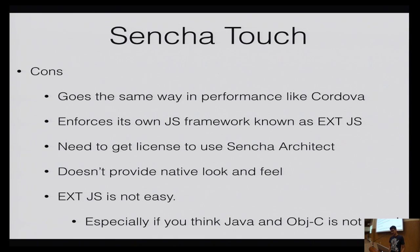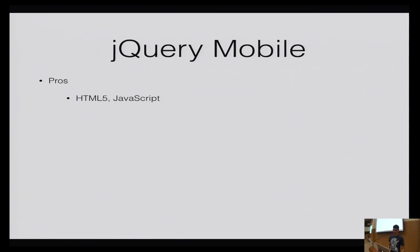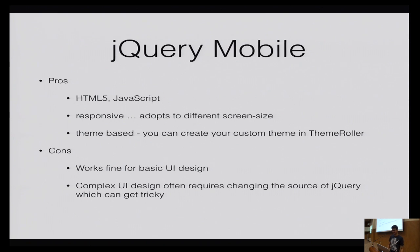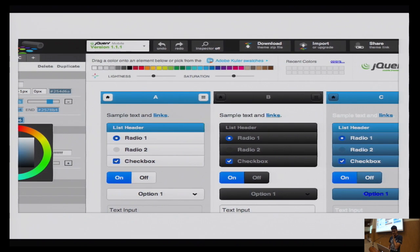Sencha doesn't provide native look and feel — something similar, but not native. ExtJS is not easy. As you see the cons of these various platforms, you'll notice whatever initial reasons you had for using cross-platform tools are slowly being eroded. jQuery Mobile is similar — it provides basic UI and works well with their default themes. But if you want to modify or create your own themes, or modify a component, you need knowledge to modify the jQuery source, which requires experience.